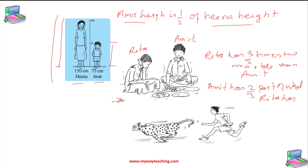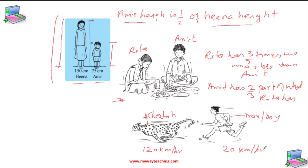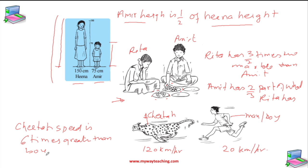Let me take one more example. This is a cheetah, and then a man or boy. The speed of the cheetah is 120 kilometers per hour, and the speed of the man or boy is 20 kilometers per hour. So we can compare that the cheetah's speed is 6 times greater than the boy's speed. We can say 6 times because if we multiply 20 by 6, it automatically becomes 120.